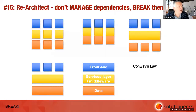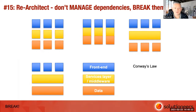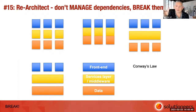Number fifteen: re-architect. Don't manage your dependencies — break them. The way teams are arranged is closely linked to the architecture of the underlying platform. Re-architecting and re-platforming is one approach. In all the cases I've seen, it's taken years, not months, to make that pivot and change the architecture.